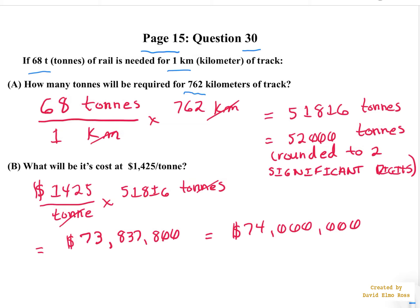Now 68 tons per one kilometer times 762 kilometers, the kilometers cancel out, and you're left with a unit of just tons.